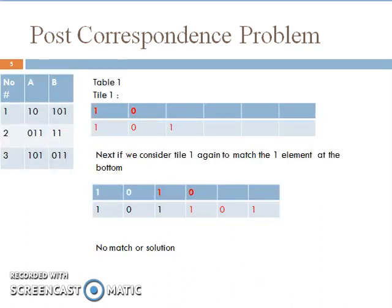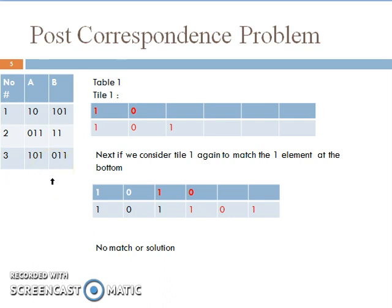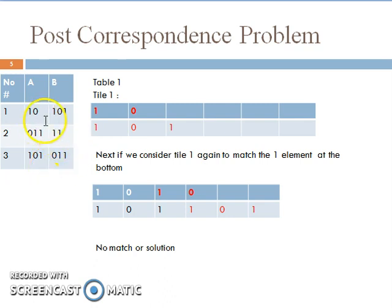Let us now consider another example with three tiles. Tile 1 has 1,0 on top and 1,0,1 at the bottom. Tile 2 has 0,1,1 on top and 1,1 at the bottom. We cannot begin with tile 2 because the first elements on the top and bottom do not match. Similarly, we cannot start with tile 3 because the first element on top is 1 and the first element at the bottom is 0. So the only obvious choice is to begin with tile 1.